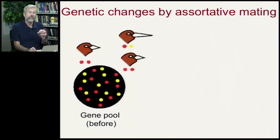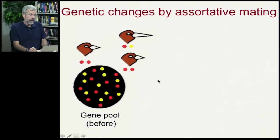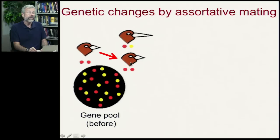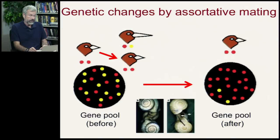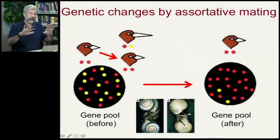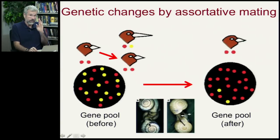We can also have non-random mating, and this can have a big effect on gene frequency. First is assortative mating. If we have two birds with a particular genotype and they prefer to mate with other individuals of their own genotype, then their alleles will become more common in the population in subsequent generations. We saw that with the snails — left-handed snails can only mate with other left-handed snails, and right-handed snails can only mate with other right-handed snails, so these populations will eventually differentiate.